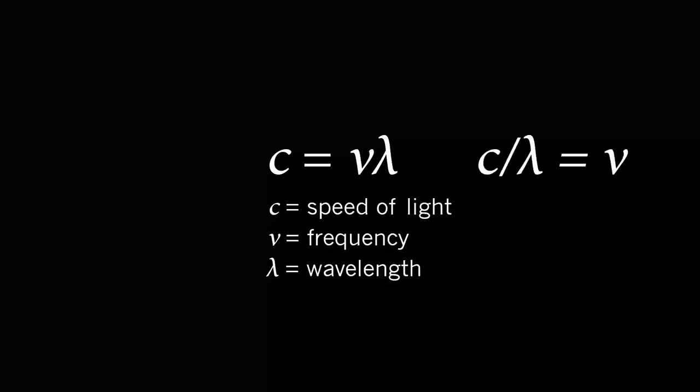So c divided by λ is equal to ν, which means that we can also write the Planck relationship as E equals hc over the wavelength λ, where c is, as usual, the speed of light.